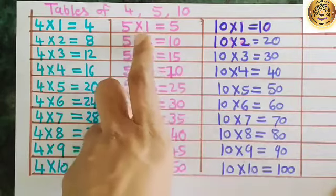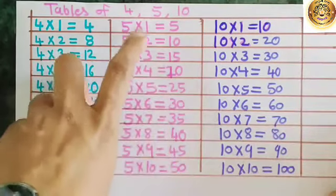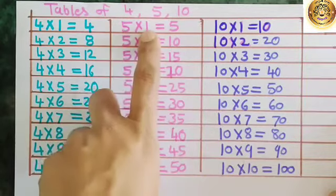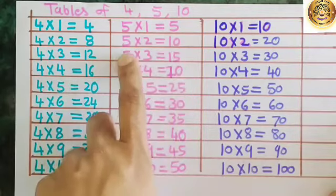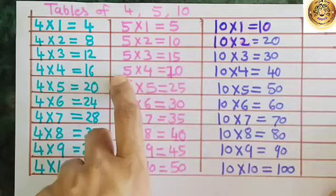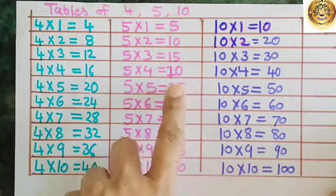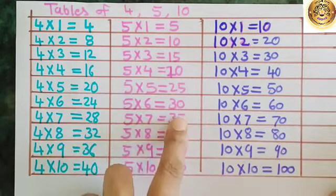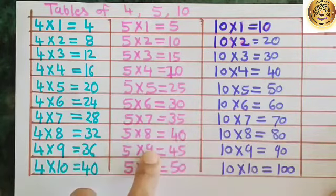And if you want to make the 5 times table, you have to add 5 again and again — 1 time, 2 times, 3 times. 5 1s are 5. 5 2s are 10. 5 3s are 15. 5 4s are 20. 5 5s are 25. 5 6s are 30. 5 7s are 35. 5 8s are 40. 5 9s are 45. 5 10s are 50.